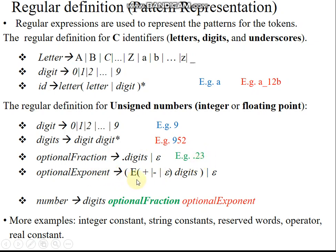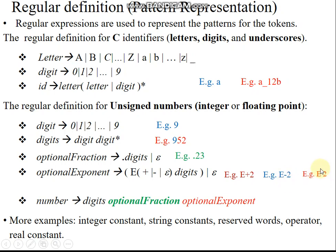The exponent is represented using E. There may be a positive exponent, a negative exponent, or no sign symbol at all — which is epsilon. The exponent will then have any number of digits. For example: positive exponent E plus one digit; negative exponent E minus 2; or epsilon where no positive or negative symbol is used.